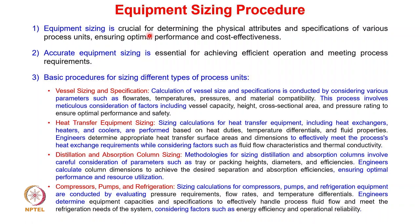Equipment sizing is crucial for determining the physical attributes and specifications of various process units, ensuring optimal performance and cost effectiveness. Accurate equipment sizing is essential for achieving efficient operation and meeting process requirements. There are four types of sizing primarily considered: vessel sizing and specification, heat transfer equipment sizing, distillation and absorption column sizing, and sizing of compressors, pumps and refrigeration.